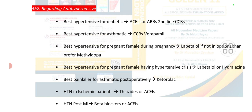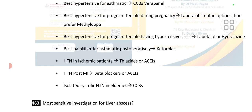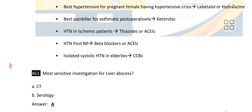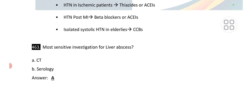Point number 462 is regarding antihypertensive drugs. The best antihypertensive for a diabetic is ACE inhibitor; if not in the option, choose ARBs. Best for asthmatic is calcium channel blocker. Best for pregnant female is labetalol; if not present, choose methyldopa. Best for pregnant female in hypertensive crisis is labetalol or hydralazine. Best painkiller for asthmatic is ketorolac. Hypertension in ischemic patient: ACE inhibitor or thiazide diuretic. Hypertension post-MI: beta blocker or ACE inhibitor. Isolated systolic hypertension in elderly: calcium channel blocker.